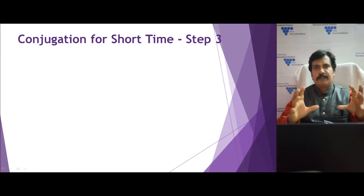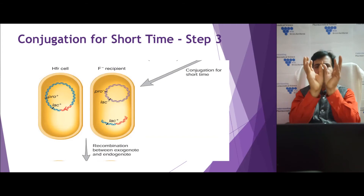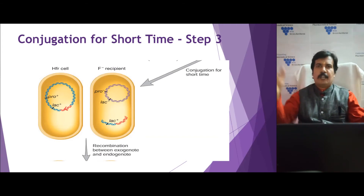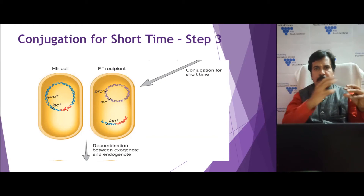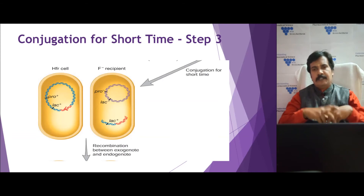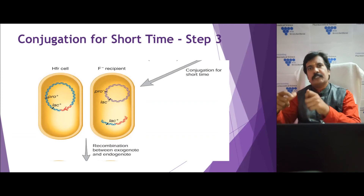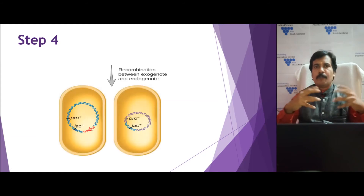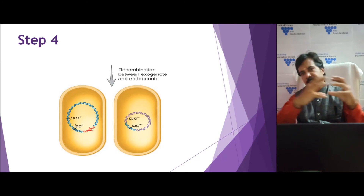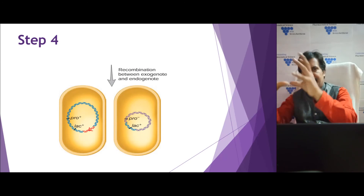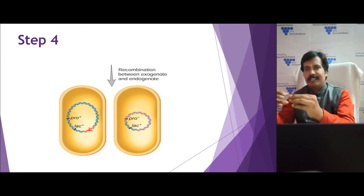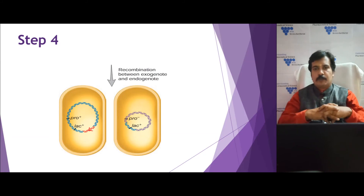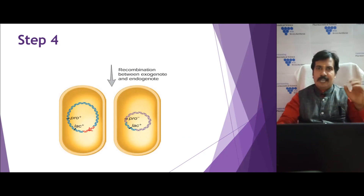If the contact is for a short duration, the pili break away due to external environmental conditions. Only a part of the gene is transferred to the F minus recipient — in this case, only the lac plus gene gets transferred, not the pro plus. The recipient synthesizes the complementary strand. Then recombination happens between the exogenate (the incoming DNA) and the endogenate (the chromosomal DNA of the F minus strain), and the F minus cell becomes lac plus.